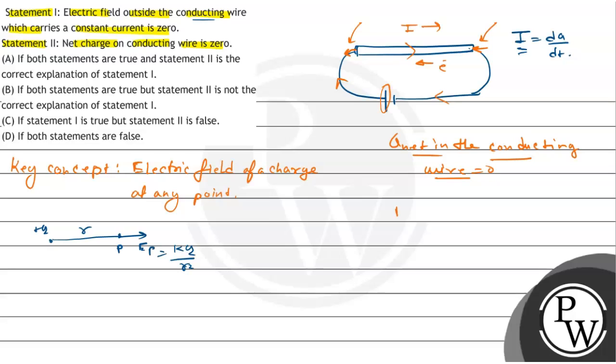And if q net is zero, then the electric field outside the conducting wire will also be zero. Because if the charge is zero, then the electric field is zero. That means our statement one is true.